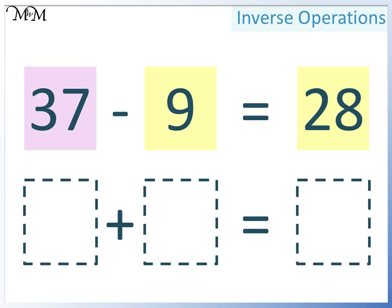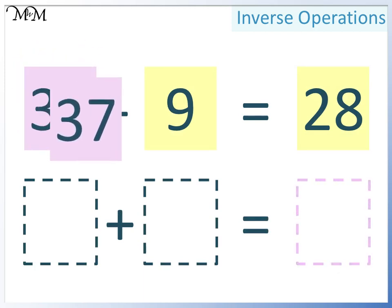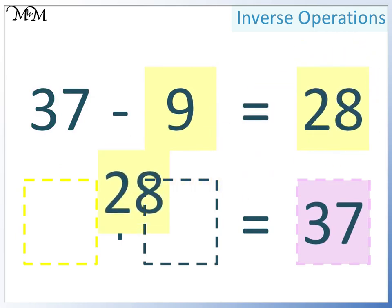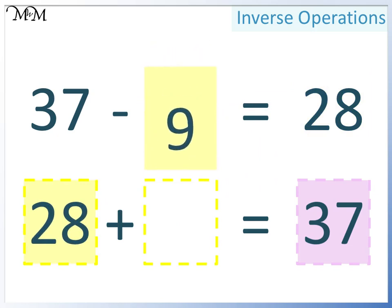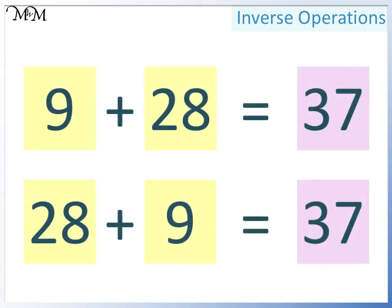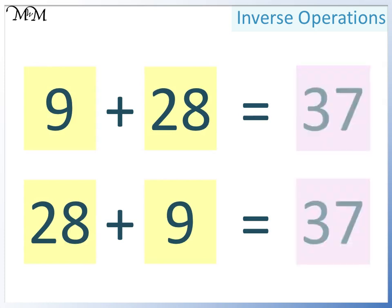Here's another way that we can write this as an addition. Remember, two smaller numbers add together to make a larger number — that larger number must be 37. In this space we can have either of the two smaller numbers; this time we'll have 28, and so 9 must go here. 28 add 9 equals 37. So we have 9 plus 28 equals 37, and 28 plus 9 equals 37. The order of the two smaller numbers doesn't matter, because they still add together to make the larger number.